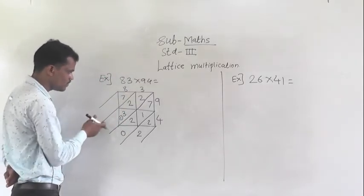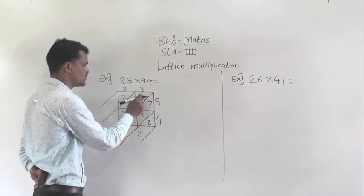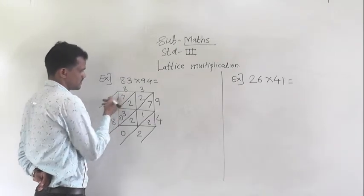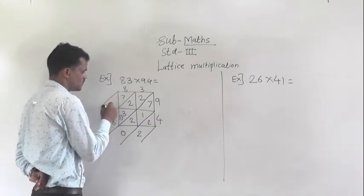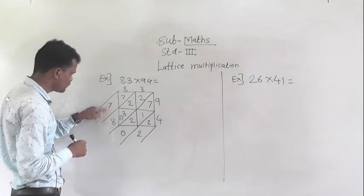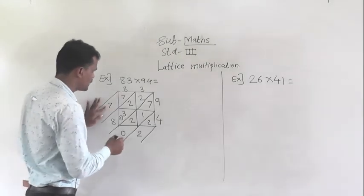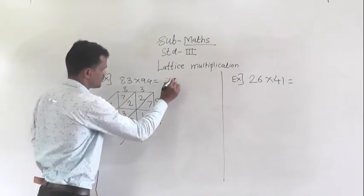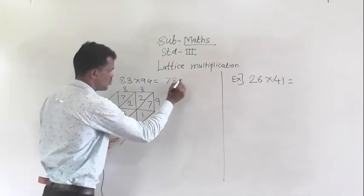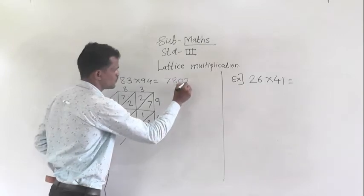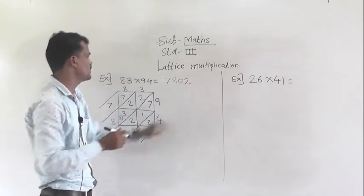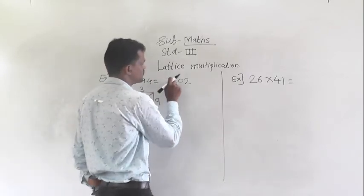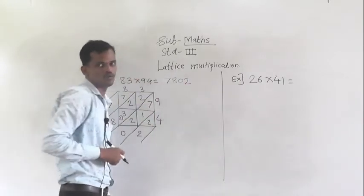Now add this column: 3 plus 2 is 5, 5 plus 2 is 7, plus 1 carry is 8. And next, here only 1 digit is there. Start from this side to write the answer: 7, then 8, then 0, then 2. So 83 multiplied by 94 is equal to 7802.